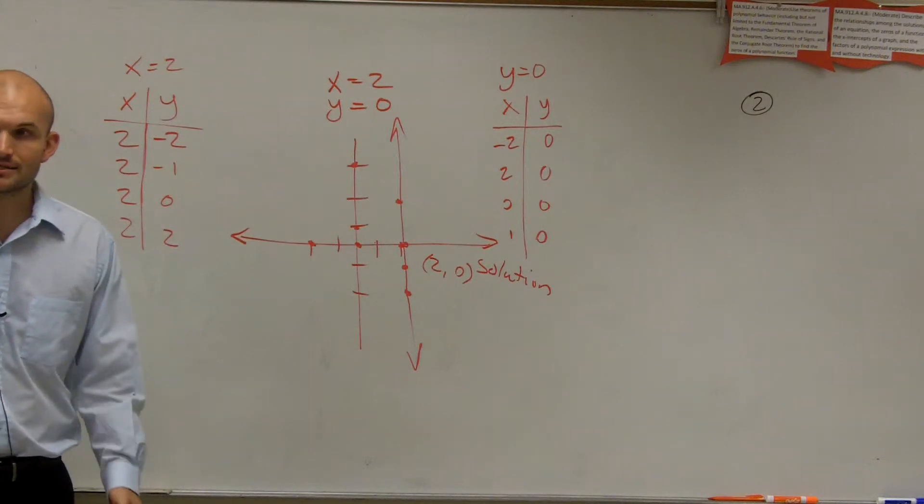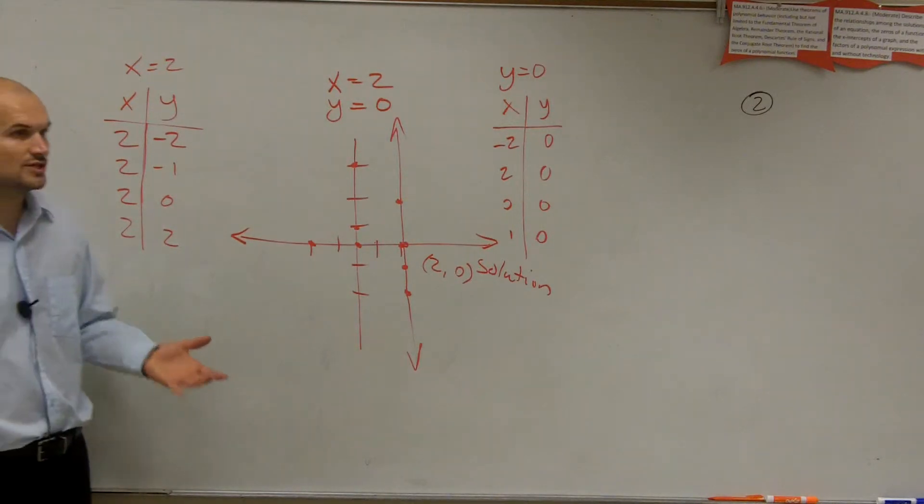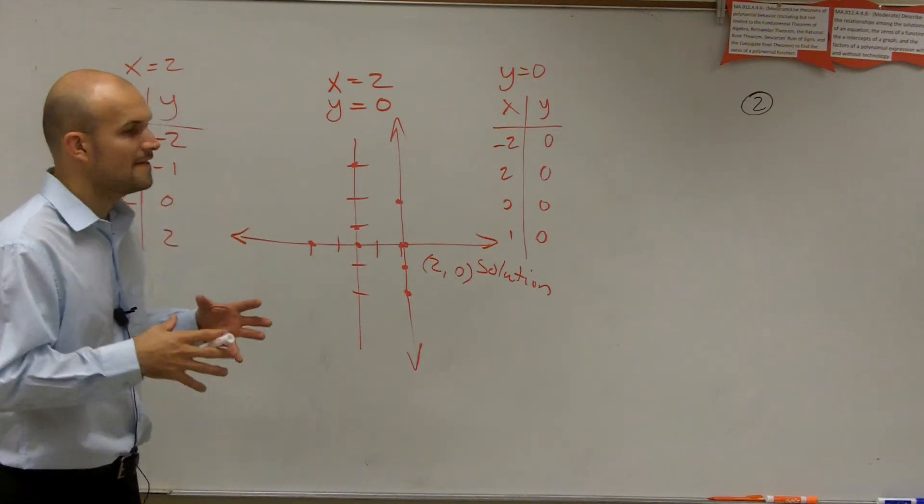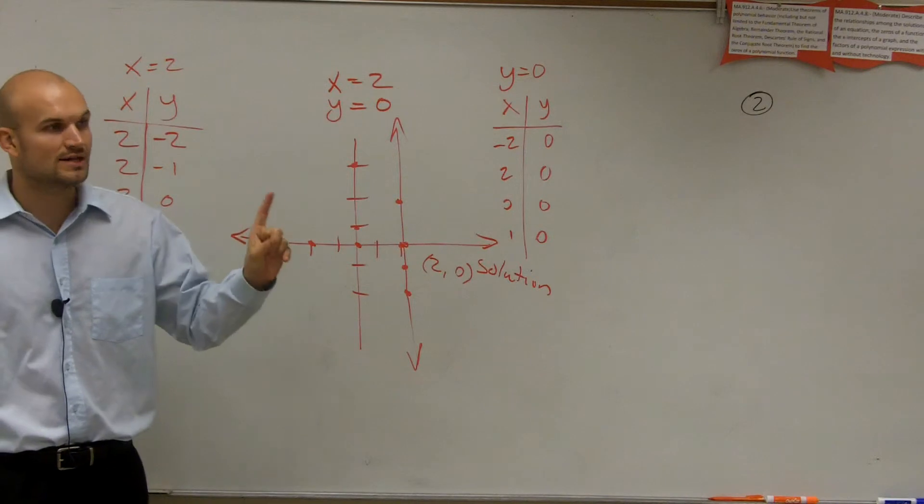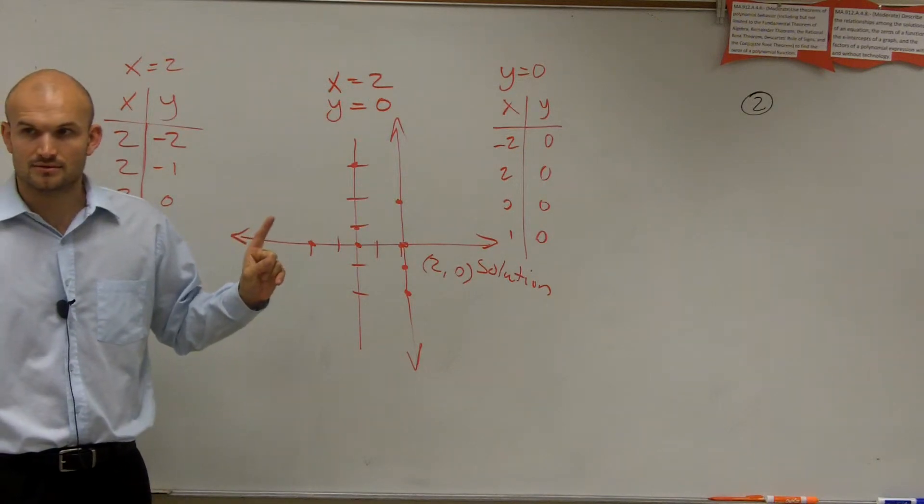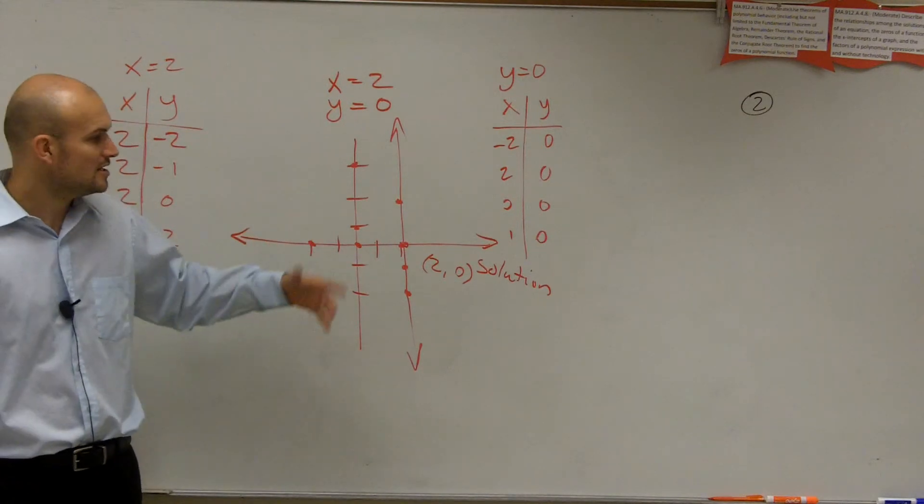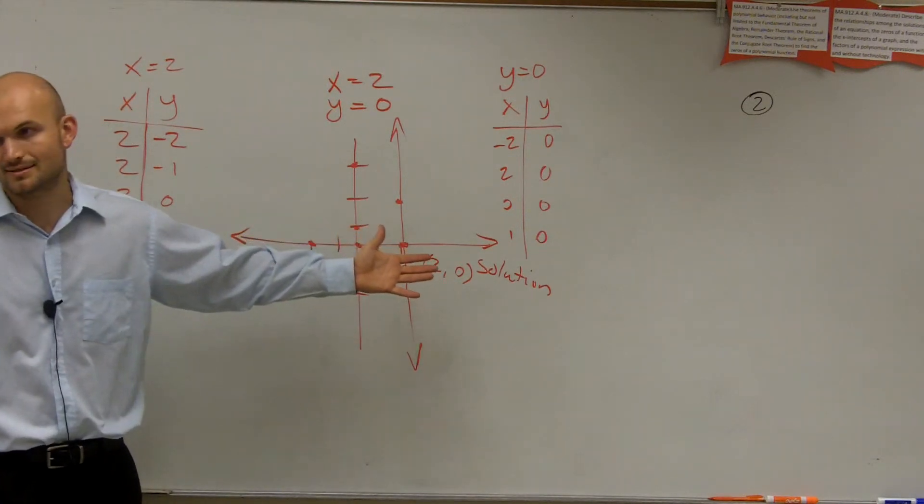And if they intersect, or there is a solution, then we call it a consistent solution. So it's going to be consistent. Then if there's exactly one solution, then it's independent. So this is independent, consistent, all right?